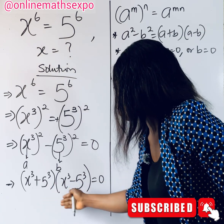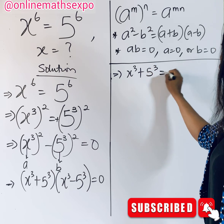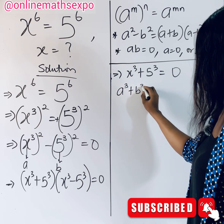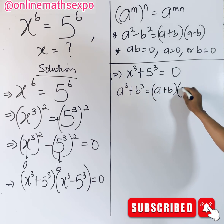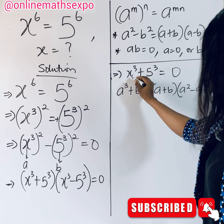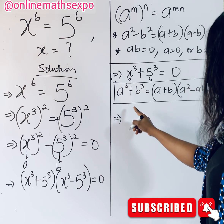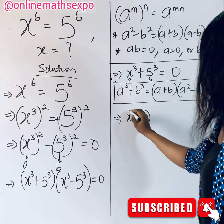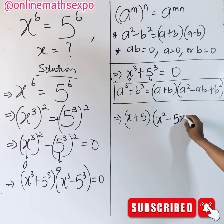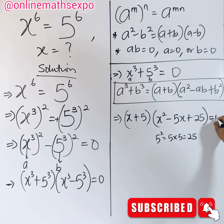So either of these two factors is equal to 0. Working with the first one: x cubed + 5 cubed = 0. This is the sum of two cubes. The formula says a cubed + b cubed equals (a + b)(a squared − ab + b squared). Applying this formula with a = x and b = 5, we get (x + 5)(x squared − 5x + 25) = 0.